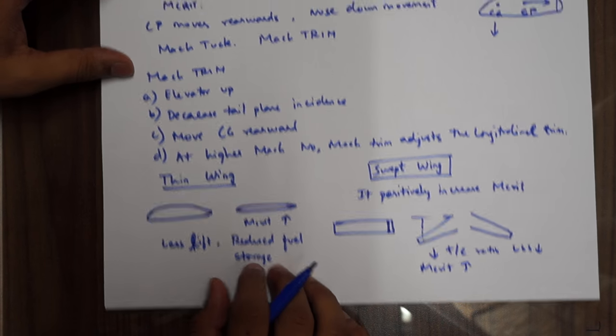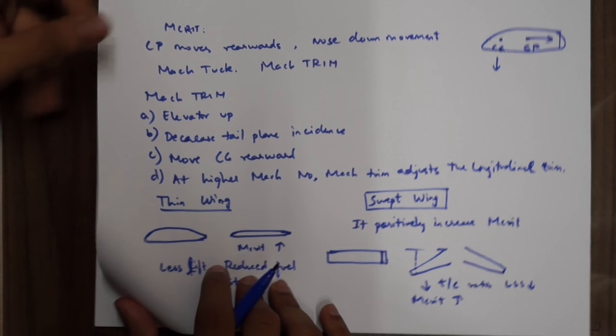That's all for high-speed flight. It's a big concept, but for exam purposes at the CPL level, this knowledge should be sufficient. For any further doubts, drop a comment and I'll answer quickly. Keep referring to books — that's the best way to learn. Next, we'll do limitations, V-speeds, and propellers to complete our subsonic aerodynamics. See you guys!